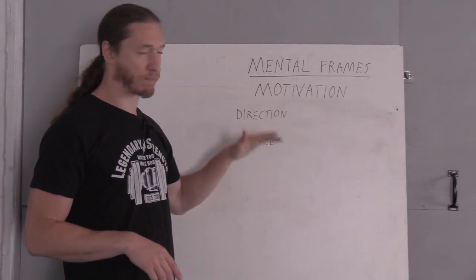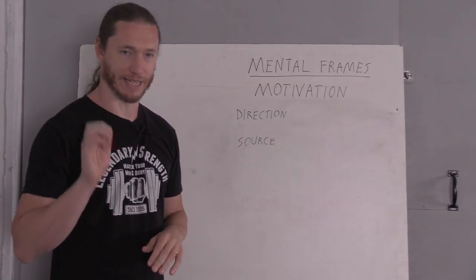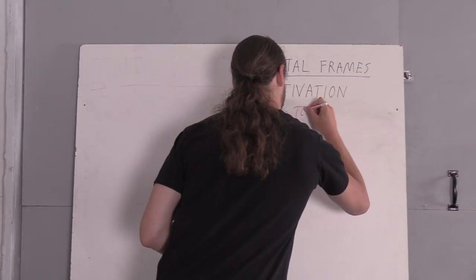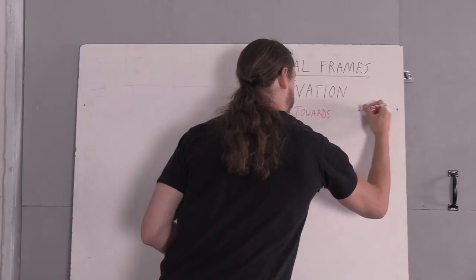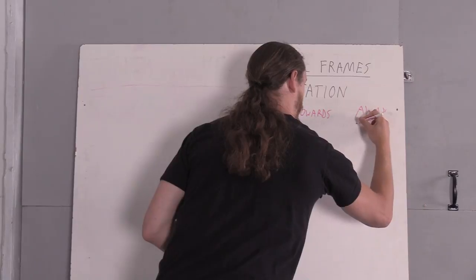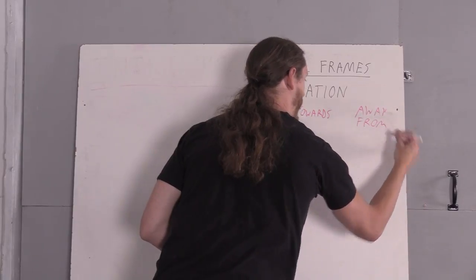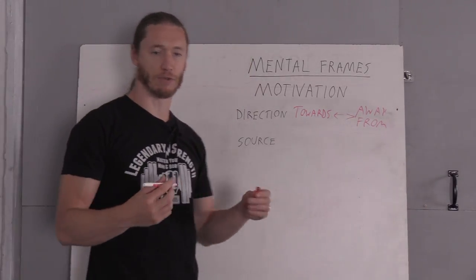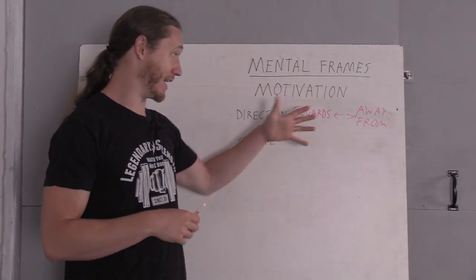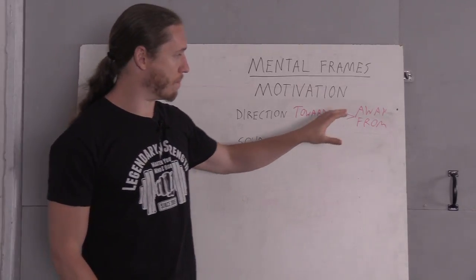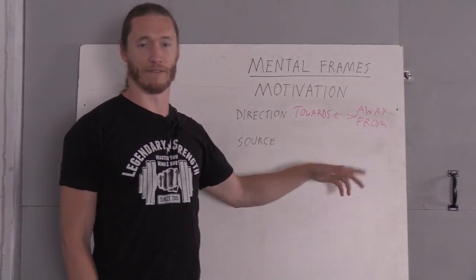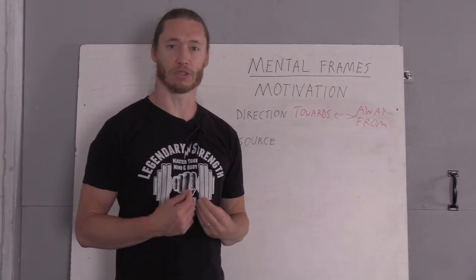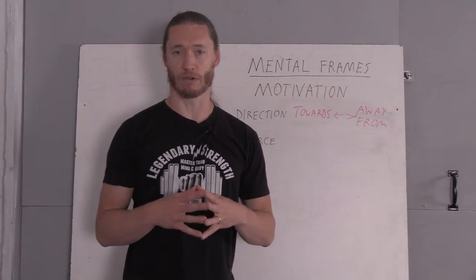So the first part of motivation you want to look at is motivation direction, and there are really only two directions you can go. There's towards and away from. And this is a spectrum. You can be more of one or more of the other. In different contexts you may be more of one than the other. But it's important to note that more people are away from motivated. It's estimated at 70% than towards, which only 30% of people. I feel that I personally am a more towards-oriented person.